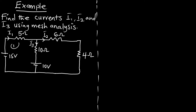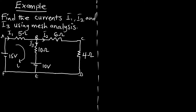This is the first mesh and this is the second mesh. We know that a mesh is a loop that does not contain any other loop, so we label points A, B, C, D, E, and F. We introduce our mesh currents: small letter i1 passing through the first mesh, and small letter i2 passing through the second mesh.